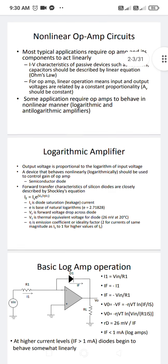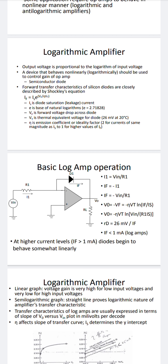The first topic is logarithmic amplifiers. In the circuit diagram of a log amplifier, an inverting amplifier configuration is used with V-in applied across resistor R1. The non-inverting terminal is grounded, and the feedback to the inverting terminal uses diode D1. The output voltage is proportional to the logarithm of the input voltage, and this non-linearity controls the gain of the operational amplifier using semiconductor diode D1 in its forward characteristics.